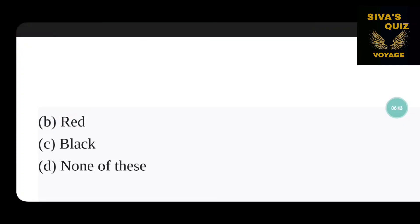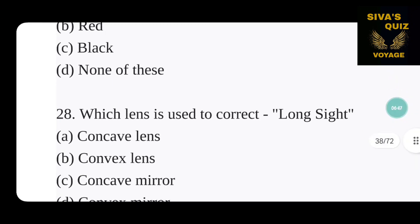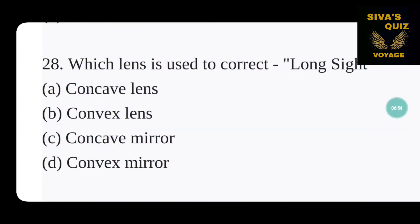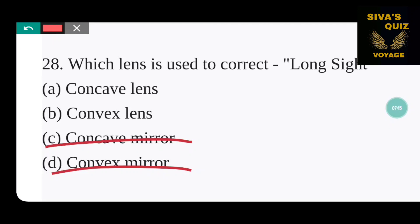Which lens is used to correct long sight? Options are concave, convex, camera, and convex mirror. To correct long sight or short sight you use a lens. The correct answer is option B — convex lens. Convex lens is the lens used to correct long sight.